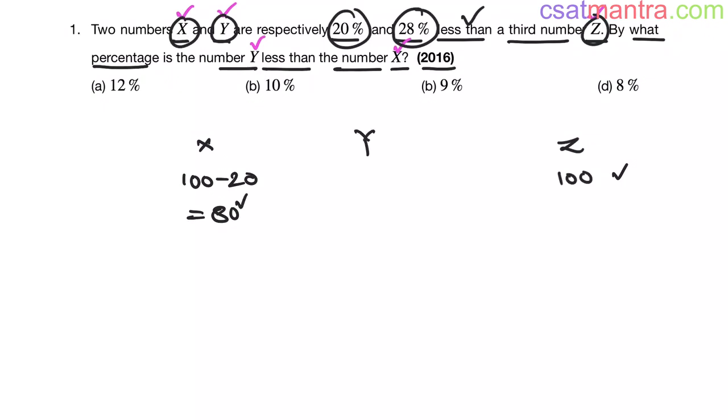Now Y is 28% less than Z. What is 28% of 100? That is 28. So Y value is 100 minus 28. Now this is equal to 72.